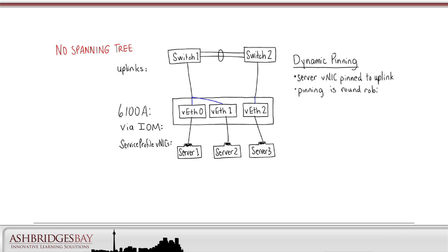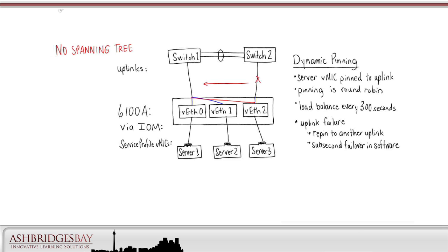The default behavior is dynamic pinning and is fine for UC on UCS. Dynamic pinning is round-robin. Load balancing occurs every 300 seconds. If you add a new link, then service profile vNICs will be repinned to the new uplink at that time. If an uplink fails, the vEthernet interface will be repinned to another uplink. The failover is software-driven and takes less than one second.